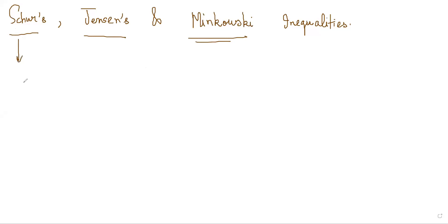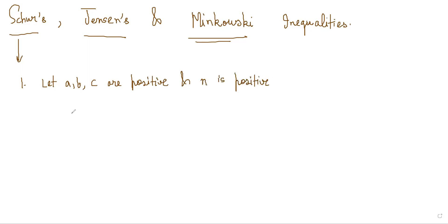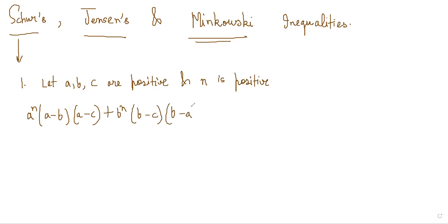So Schur's inequality: if a, b, and c are positive numbers and n is also a positive number, then we can prove that a^n(a−b)(a−c) + b^n(b−c)(b−a) + c^n(c−a)(c−b) is always greater than or equal to zero.